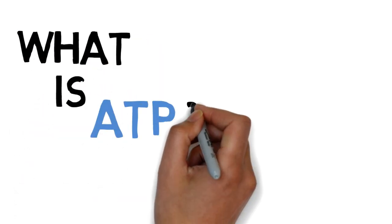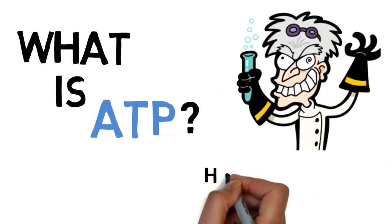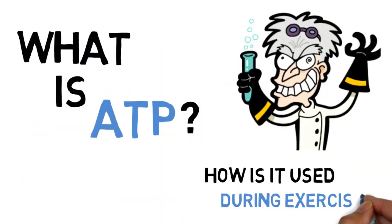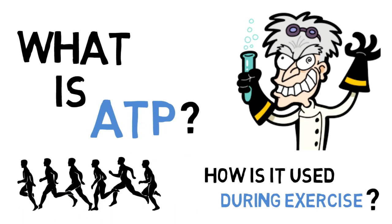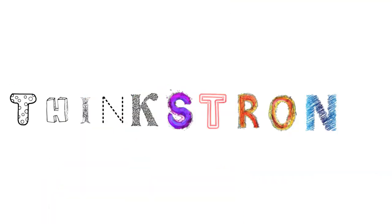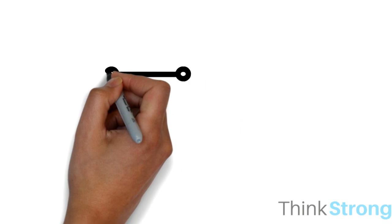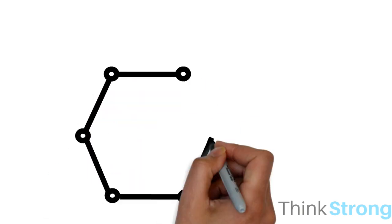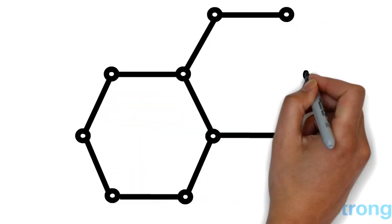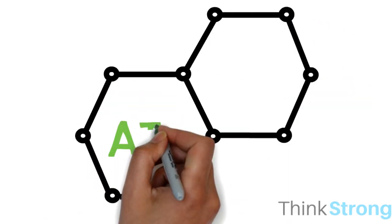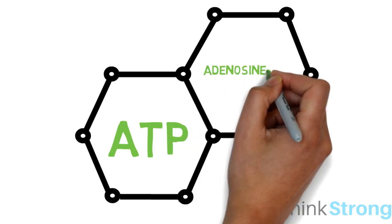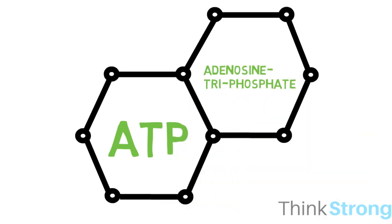What is ATP and how is it used during exercise? The only form of energy your body can use is in the form of a molecule called ATP, which stands for adenosine triphosphate.